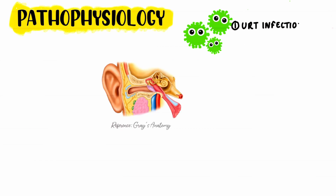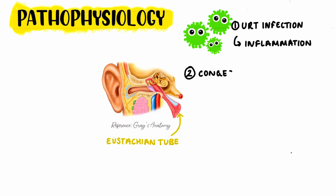Initially, an upper respiratory tract infection starts off the process, as this causes immediate inflammation leading to swelling and edema. This will impact the respiratory mucosa within the nose, nasopharynx, and eustachian tube. As discussed in a previous video, the eustachian tube is the canal that connects the middle ear to the nasopharynx.